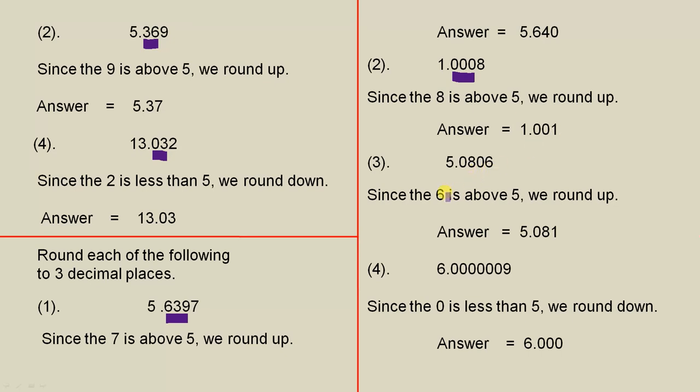5.0806. Since the 6 is above 5, so remember again, we're going to three decimal places. That 6 is above 5, make that a 1. So the answer is 5.081.